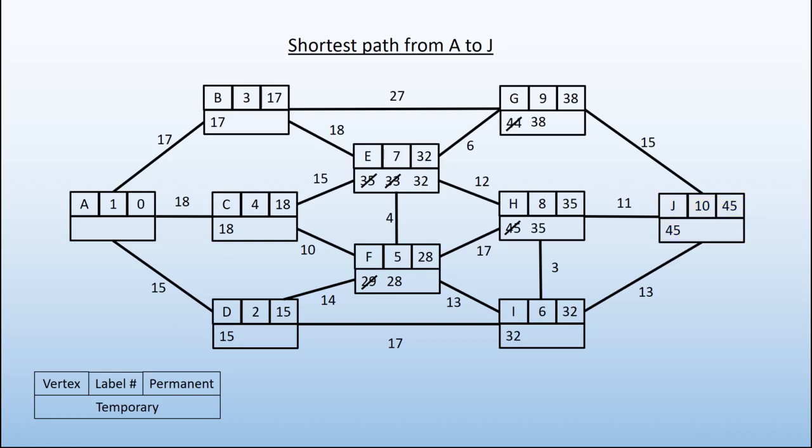That's our completed diagram for Dijkstra's algorithm. Remember what we're trying to do is get from A to J in the shortest distance. We now know that we can get from A to J in a distance of 45. That is the permanent label of our destination vertex.